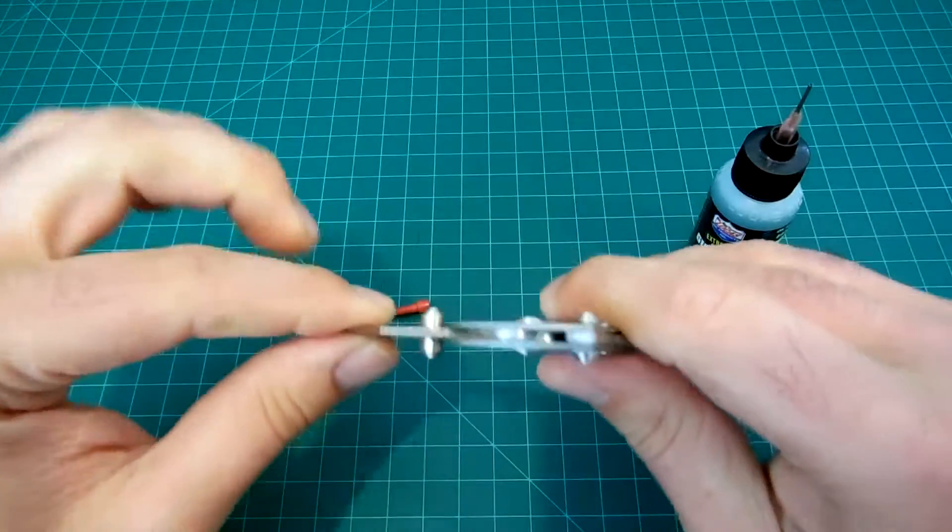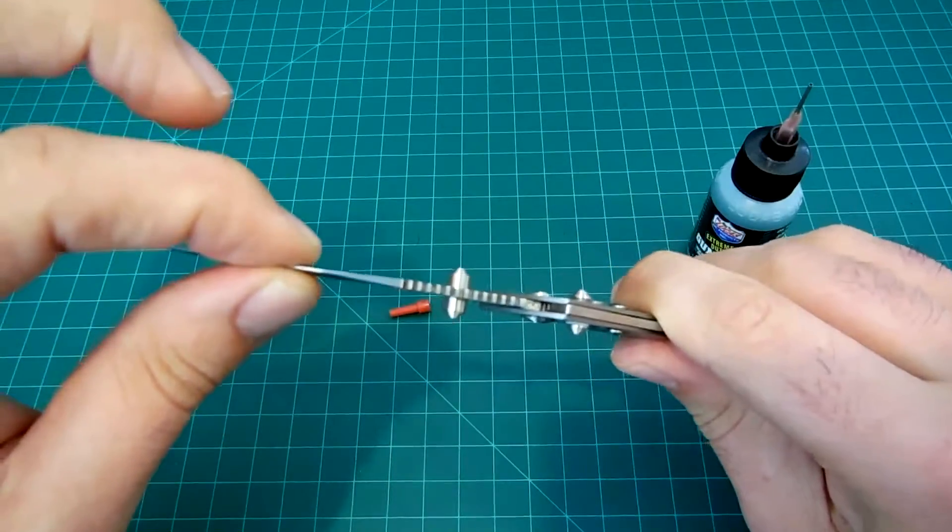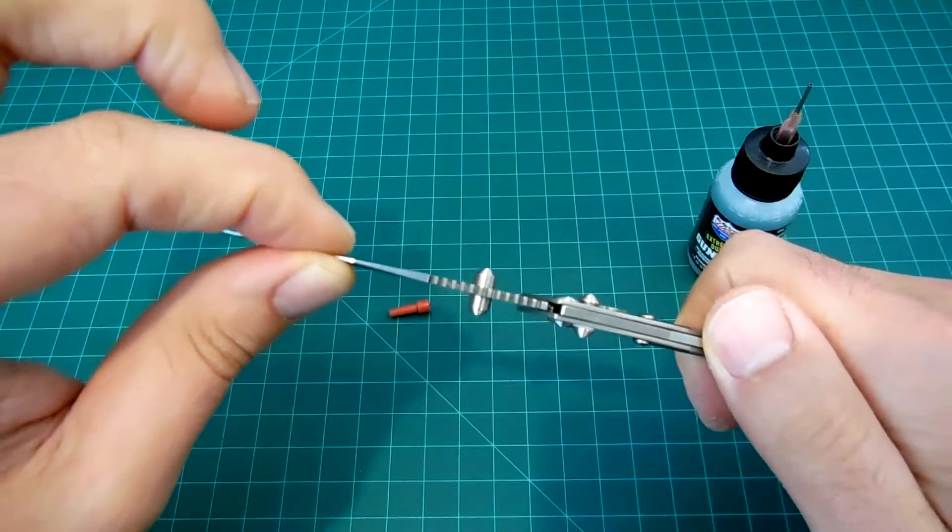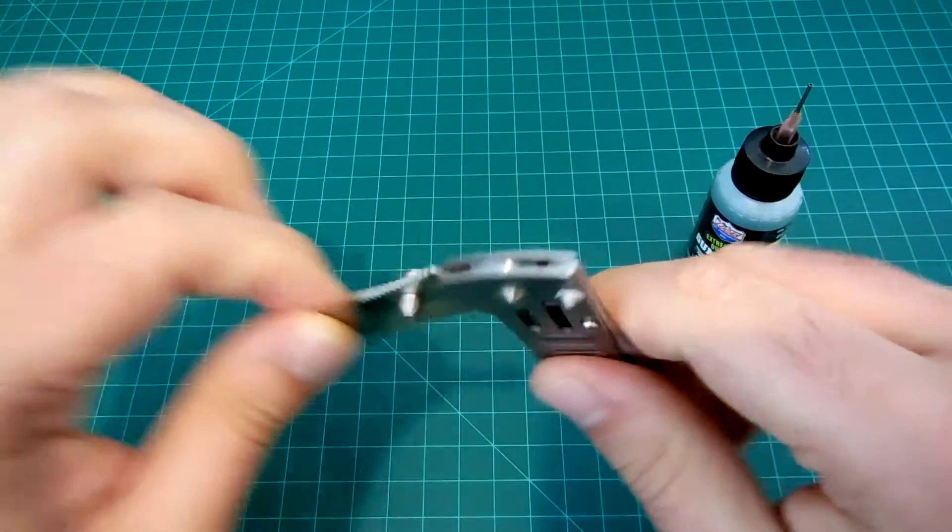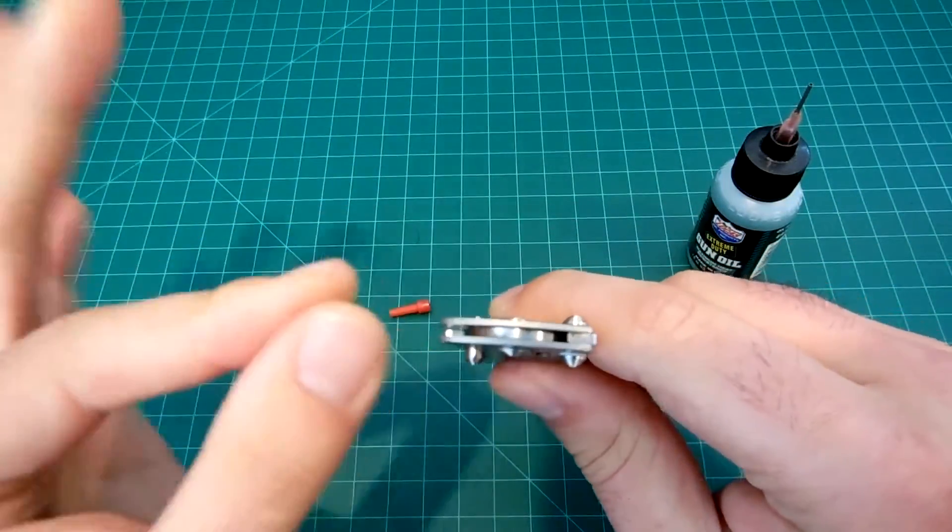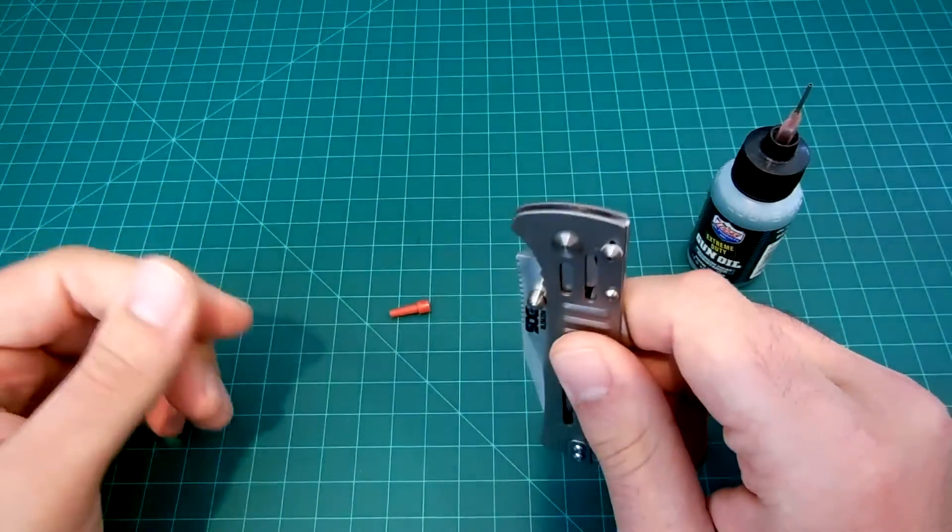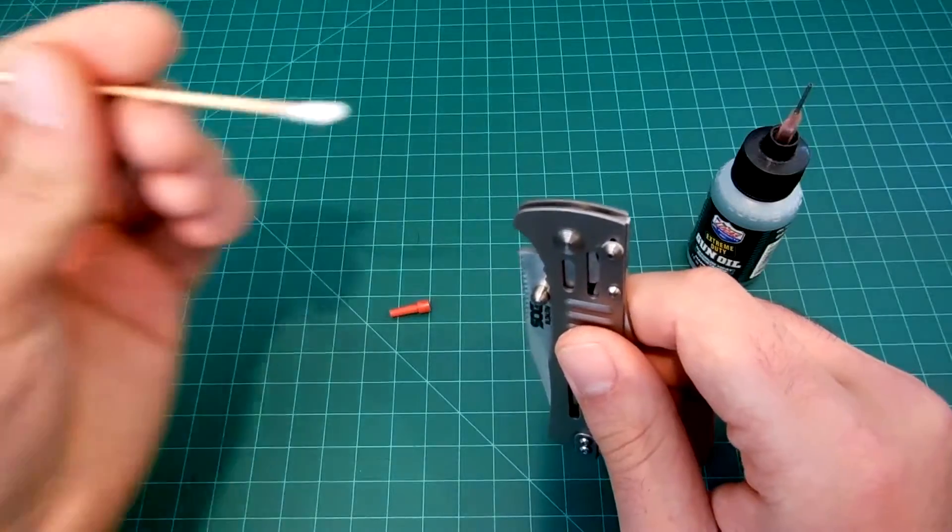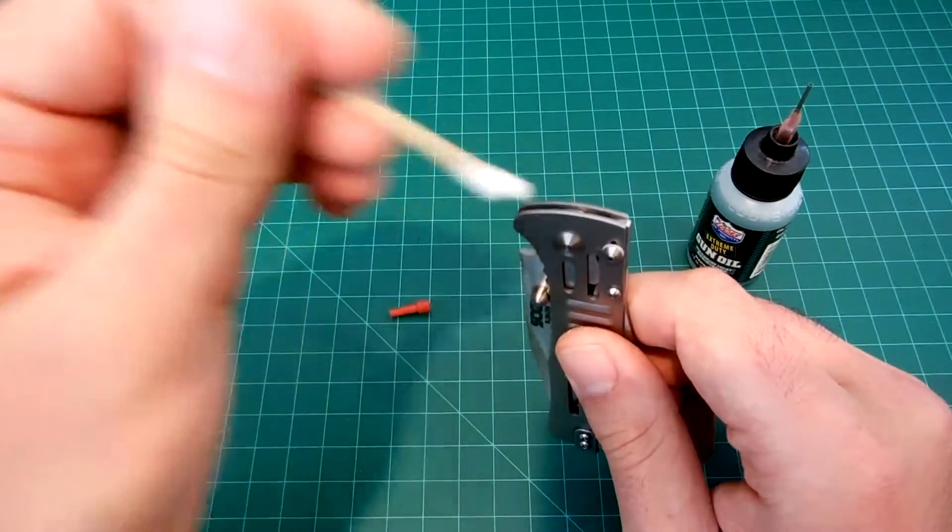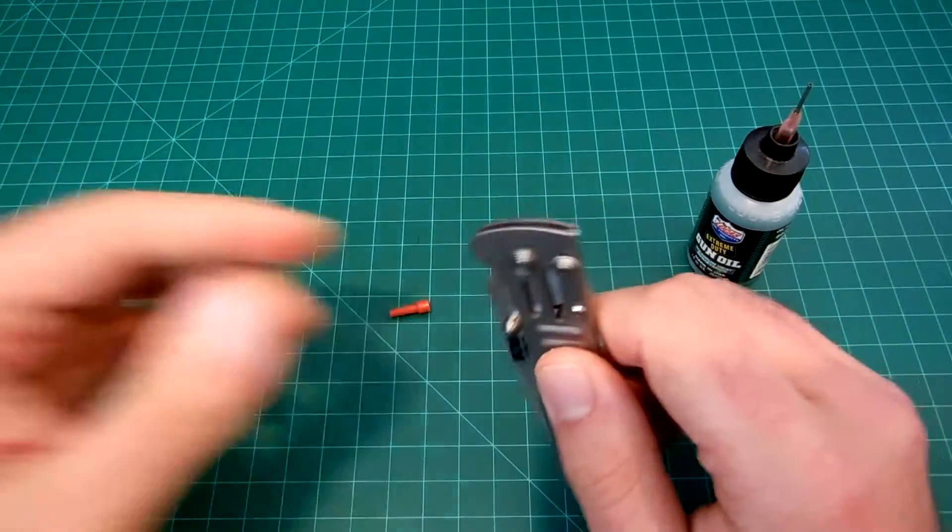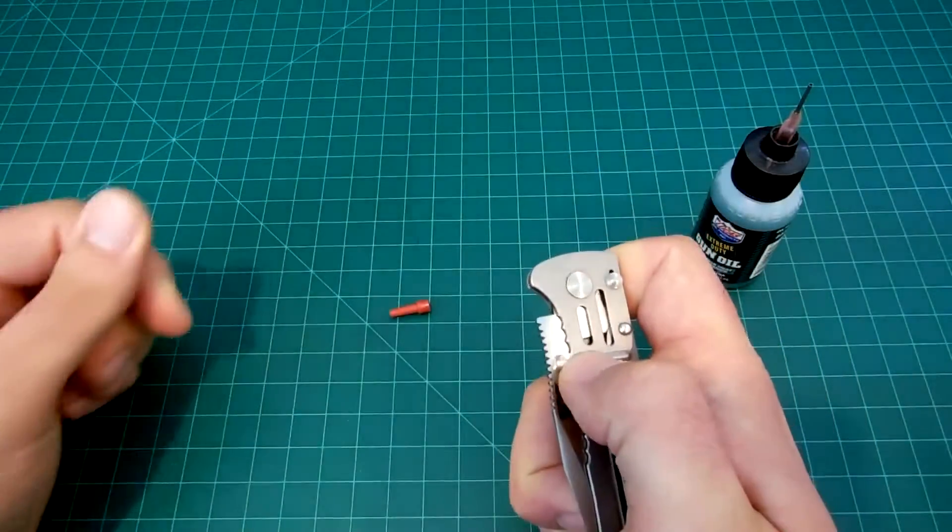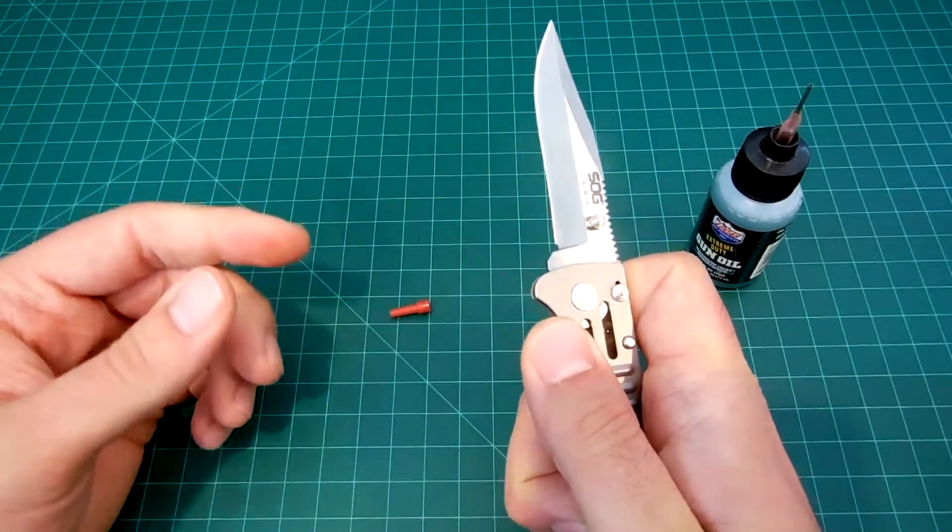When the knife was closed I applied a very small drop right here on this surface where it has to ride against the locking bar in the back. I moved it a little bit so it established a small thin film of oil on the moving parts. After that I used a Q-tip to wipe up the excess oil. For the most part it seems to have smoothed up the opening action quite a bit.